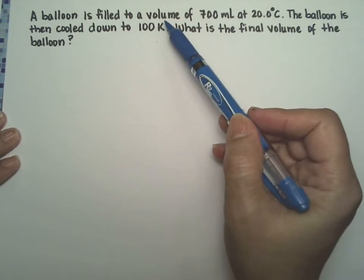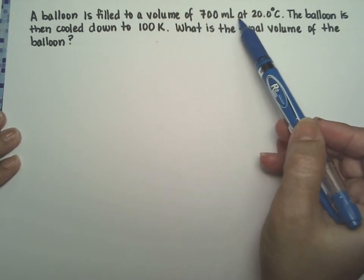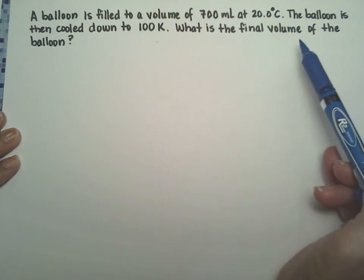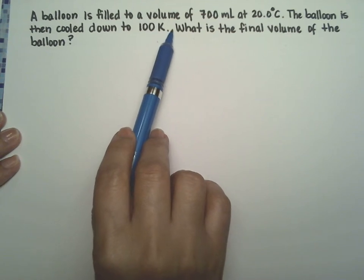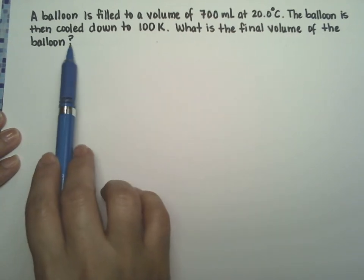For this one, a balloon is filled to a volume of 700 milliliters at 20 degrees Celsius. The balloon is then cooled down to 100 kelvins. What is the final volume of the balloon?